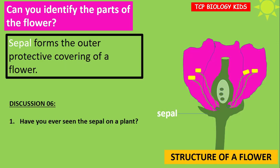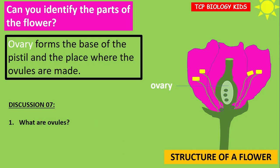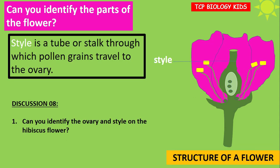The sepal forms the outer protective covering of a flower. Have you ever seen the sepal on a plant? Check it out and let us know in the comments. The ovary forms the base of the pistil and is the place where the ovules are made. What are ovules?